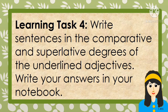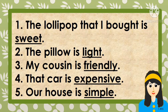For learning task number 4, write sentences using the comparative and superlative degree of the underlined adjective. Given sentences: 1) 'The lollipop that I bought is sweet.' 2) 'The pillow is light.' 3) 'My cousin is friendly.' 4) 'That car is expensive.' 5) 'Our house is simple.' Write your answers in your notebook, constructing new sentences for comparative and superlative forms.